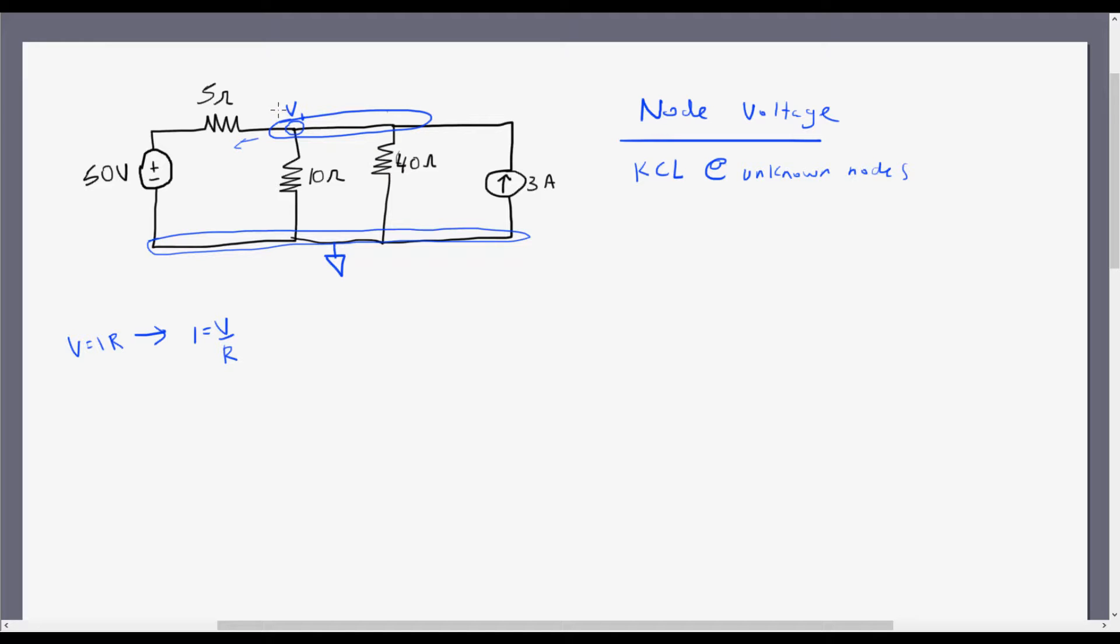So it's going to be V1 minus 50 volts for my positive voltage source with the positive sign on top. That's how I know it's a positive 50, but since I'm taking the drop across it, or the subtraction, I'm going to subtract 50. Over 5 ohms, that's my resistance, that's my R.